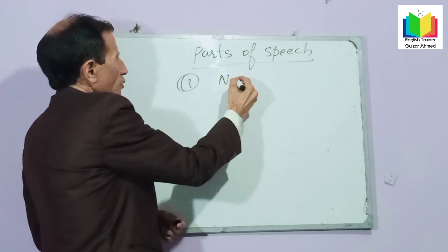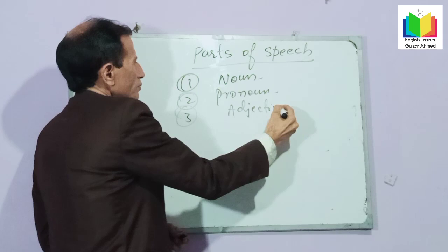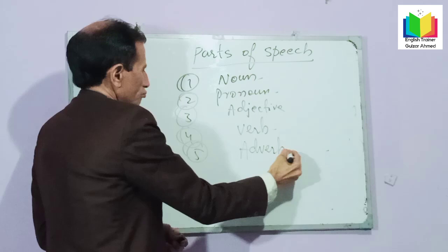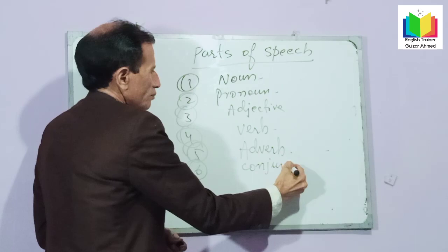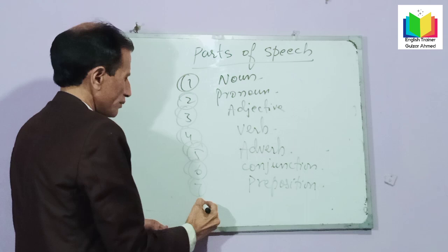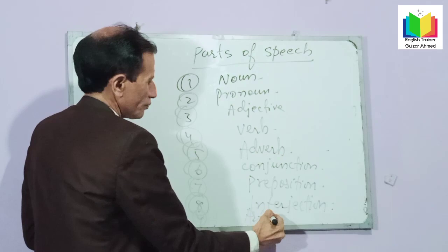I will write all the parts of speech on the board. Number one: noun. Number two: pronoun. Number three: adjective. Number four: verb. Number five: adverb. Number six: conjunction. Number seven: preposition. Number eight: interjections. And number nine: article.